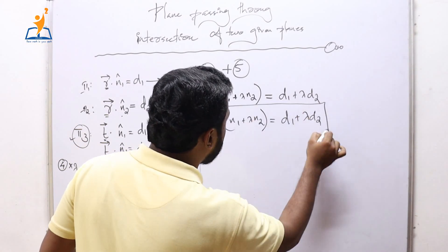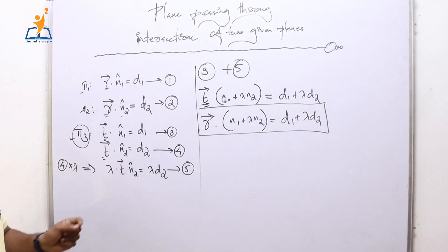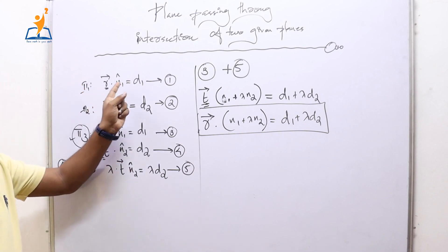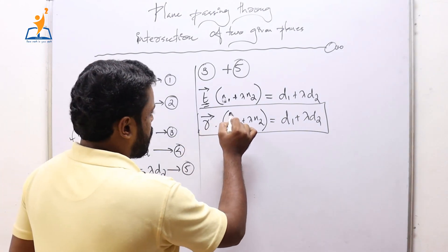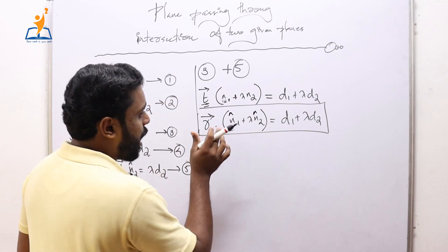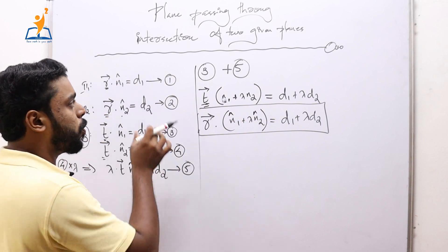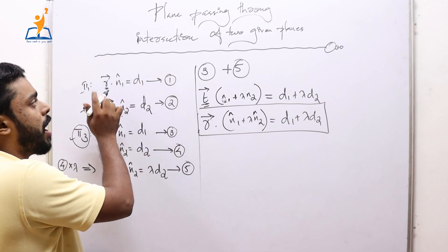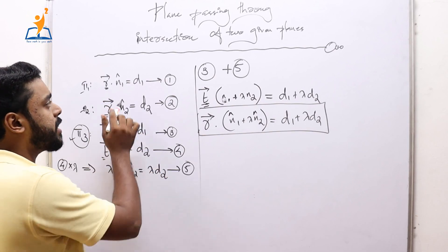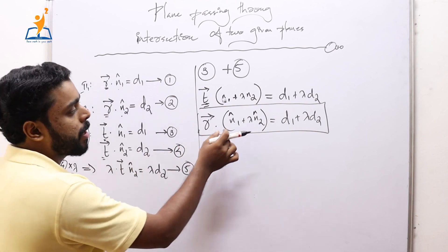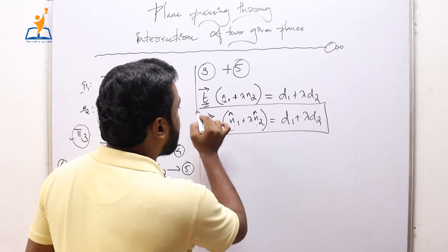Replacing t by r, the equation becomes: r · (n1̂ + λn2̂) = d1 + λd2. This is the vector equation of a plane which is in the intersection of two other planes with equations r · n1̂ = d1 and r · n2̂ = d2. To find the equation of a plane through the intersection of two planes, just identify n1̂, n2̂, d1, and d2 and substitute them here.